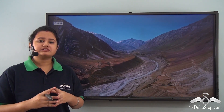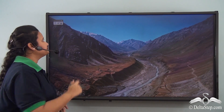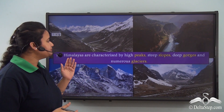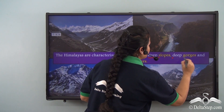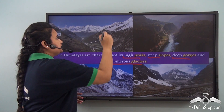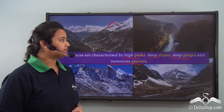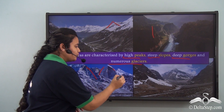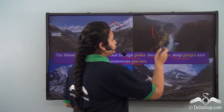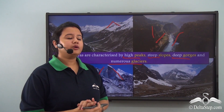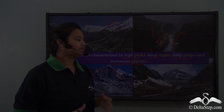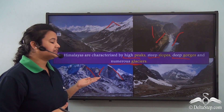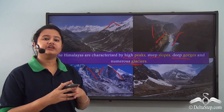In today's lesson we shall discuss about the importance of northern mountains. The Himalayas are characterized by high peaks, steep slopes, deep gorges and numerous glaciers. A peak refers to the summit, which is usually conical in shape. The slopes refer to the sides of a mountain, and in case of the Himalayas these slopes are very steep or almost vertical. A gorge refers to a narrow valley with steep rocky walls, formed when a glacier carves out the surface of the earth. A glacier refers to moving sheets of ice, commonly found in hilly regions like the Himalayas, and they help define the topography of the Himalayan range.